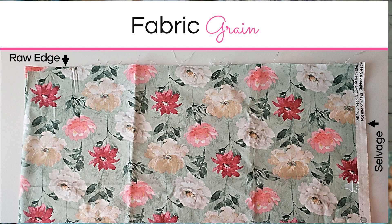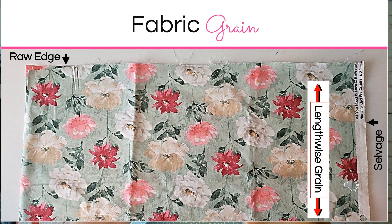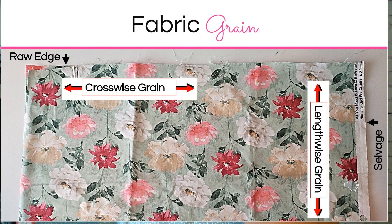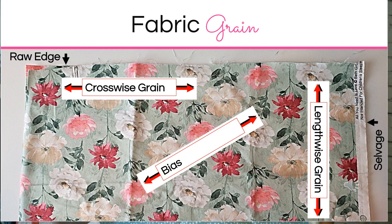The raw edge is the piece that is cut when you go to the fabric store. The lengthwise grain follows the selvage, while the crosswise grain follows the raw edge. The bias is the 45-degree angle between the lengthwise grain and the cross grain.